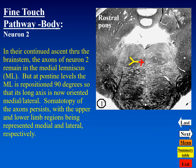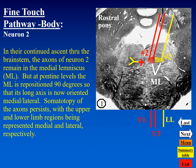In the pons, axons of neuron two continue to ascend through the medial lemniscus, which has now rotated about 90 degrees. Somatotopy is still maintained, with the upper limb most medially represented and the lower limb laterally represented in the medial lemniscus.